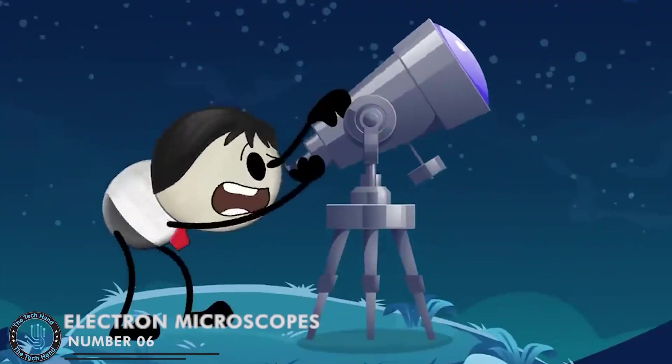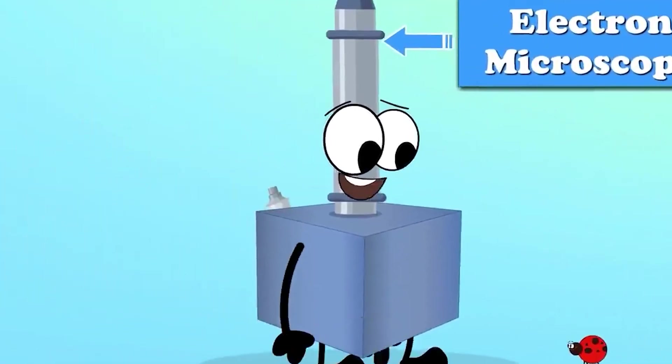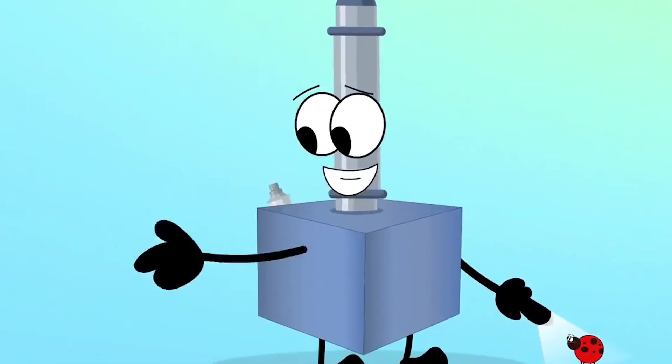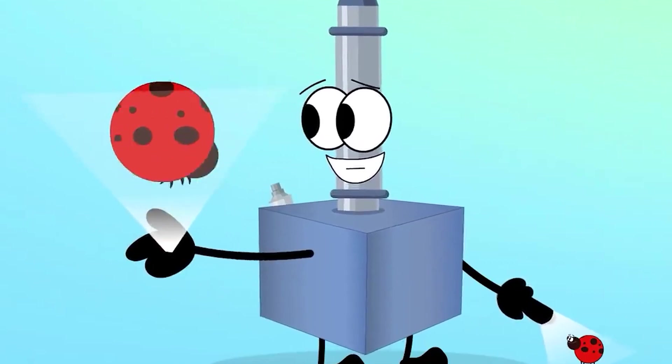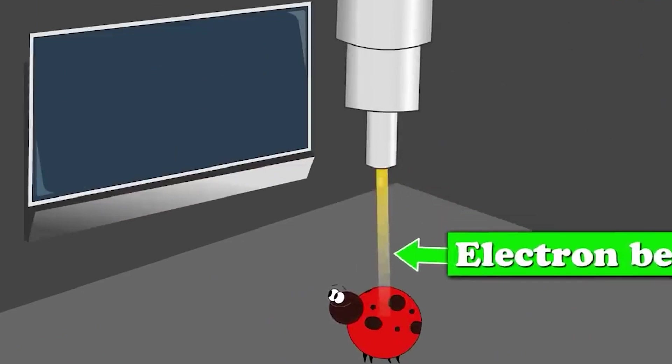Number 6: Electron Microscopes. An electron microscope is a microscope that uses a beam of electrons to create an image of a sample. Electron microscopes have a much higher resolving power than light microscopes and can be used to image samples at the atomic level.